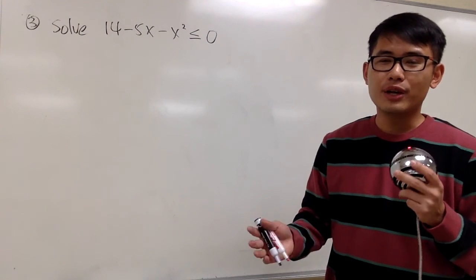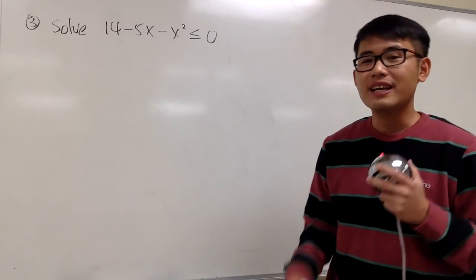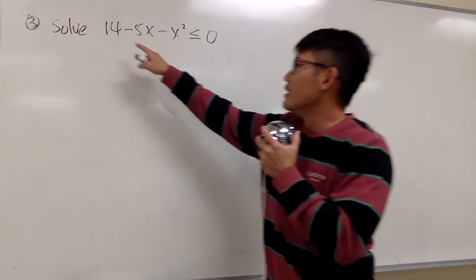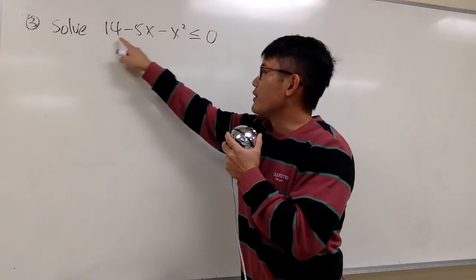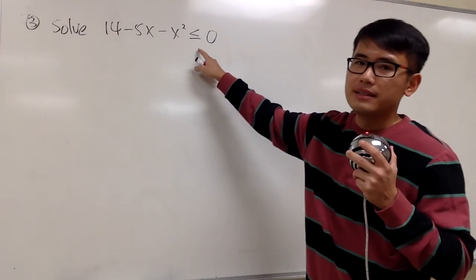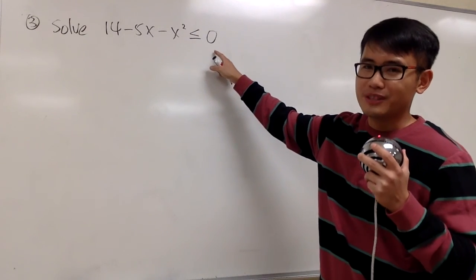Hopefully you guys will have a chance to try these two questions first. Now let's look at this one. We are going to solve 14 minus 5x minus x squared is less than or equal to 0.